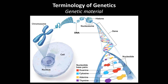DNA is comprised of four nucleotides which form base pairs: adenine, guanine, cytosine, and thymine. All traits are coded on the DNA by a certain sequence of nucleotides called genes or alleles. They form the units of inheritance that transmit information from parents to offspring.